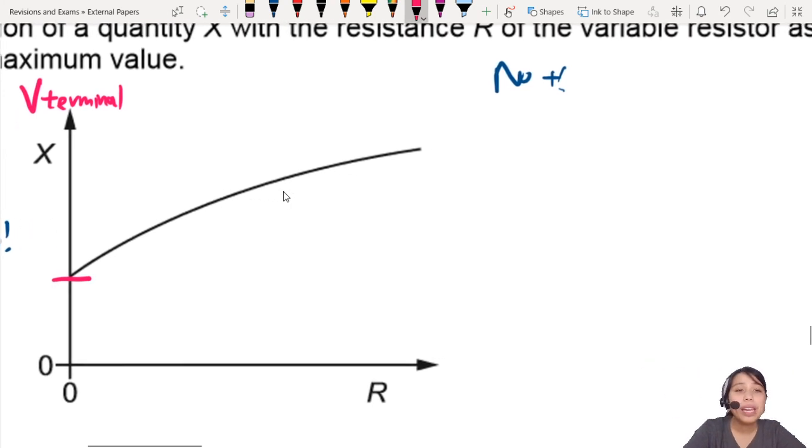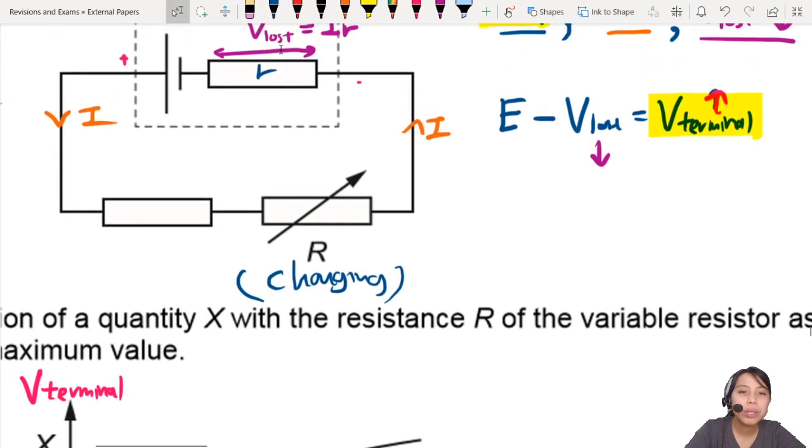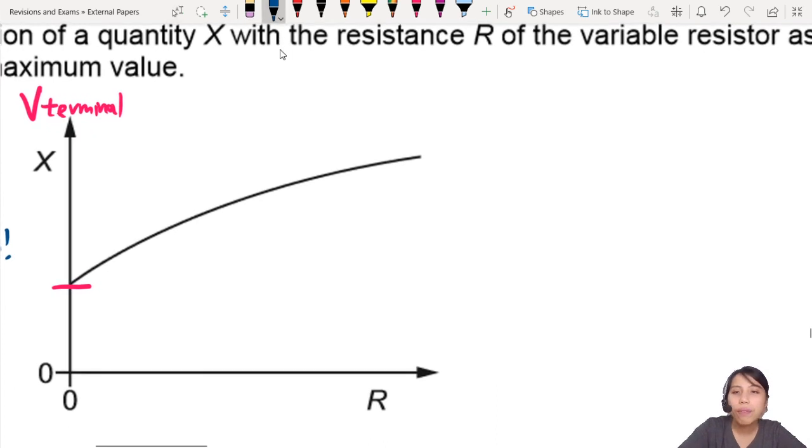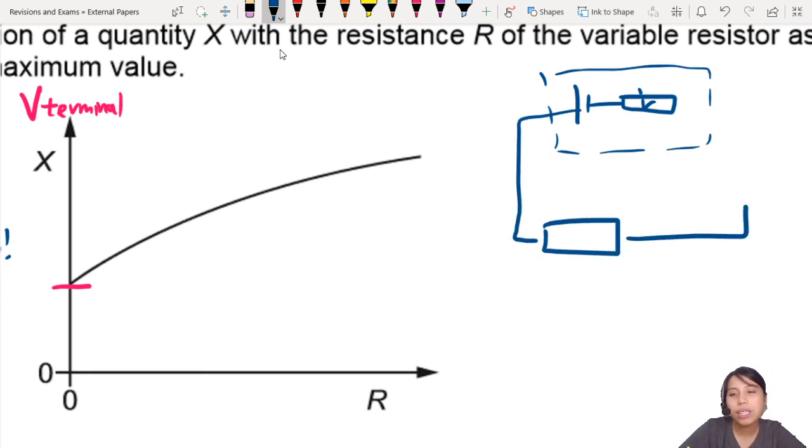Well, I can draw it out for you. If you want to say, what happens when R is 0? R is talking about the external resistor, right? If R is 0, it's basically you saying that you have decreased the resistance until a certain this resistor is here, the other one's gone. So, will you still have terminal potential difference? Yes, you still will have it.